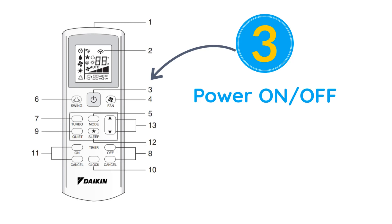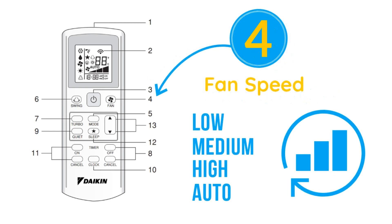To change the fan speed, press the fan button multiple times until you get the desired fan speed. You can set the fan to low speed, medium speed, high speed, or auto. In auto fan, Daikin AC will automatically adjust the fan speed as per the desired temperature.